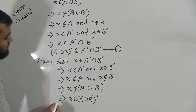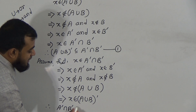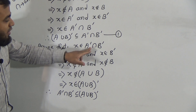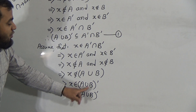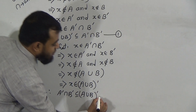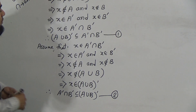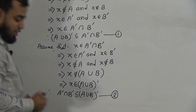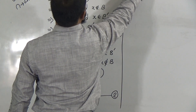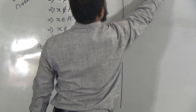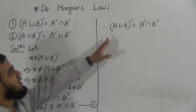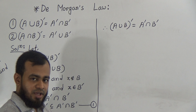Therefore, A prime intersection B prime is a subset of A union B whole prime. This is our equation number two. From equations one and two, both sets are subsets of each other. Therefore, A union B whole prime equals A prime intersection B prime. Proposition two — you must prove that in your copy as homework.